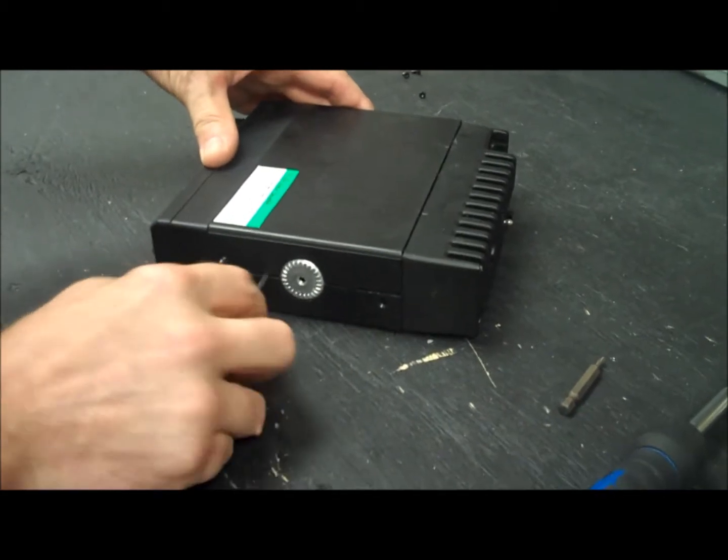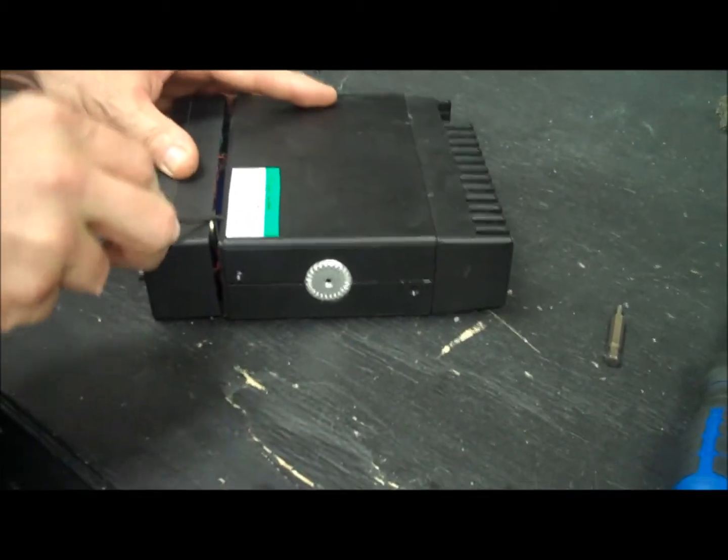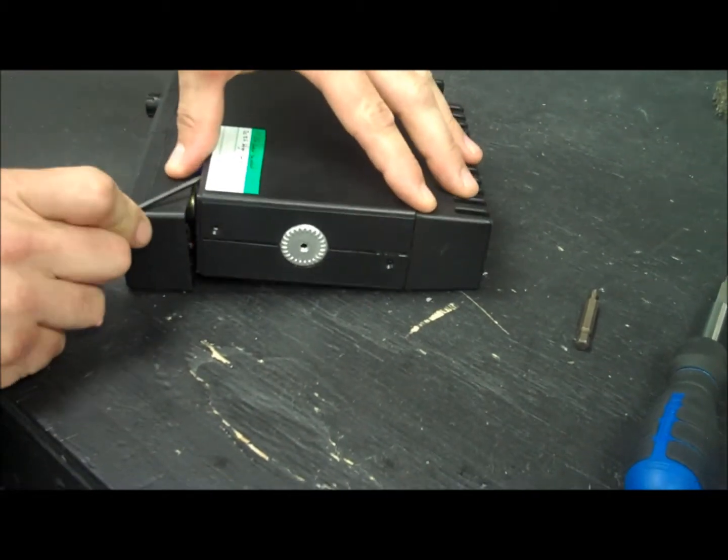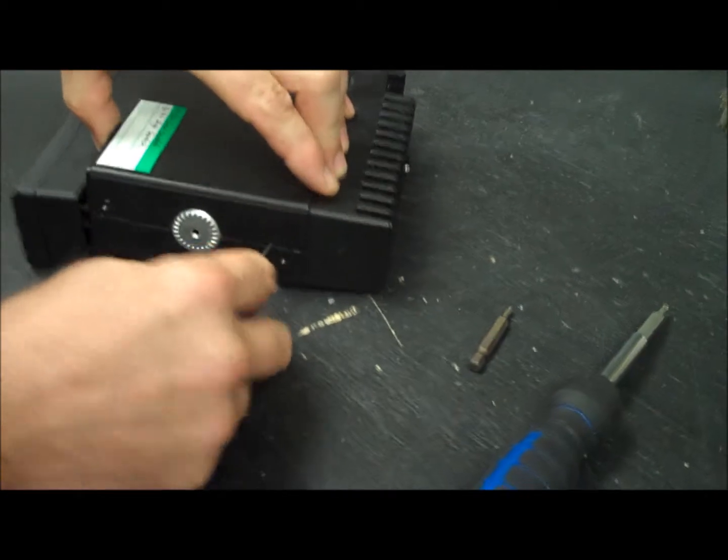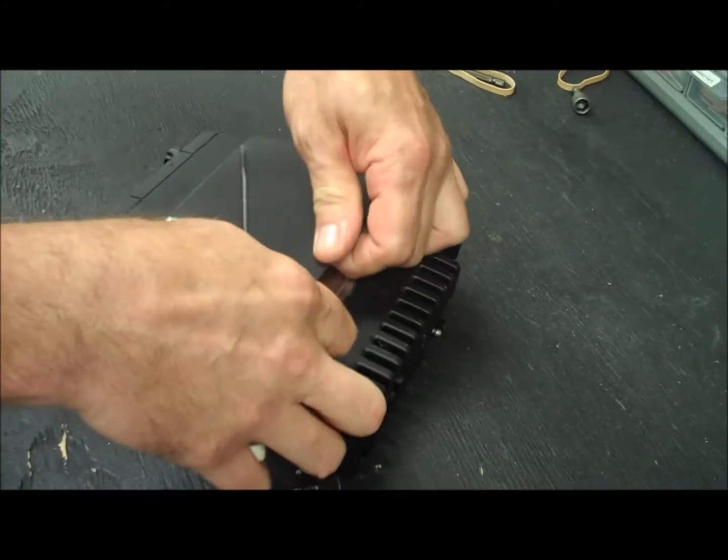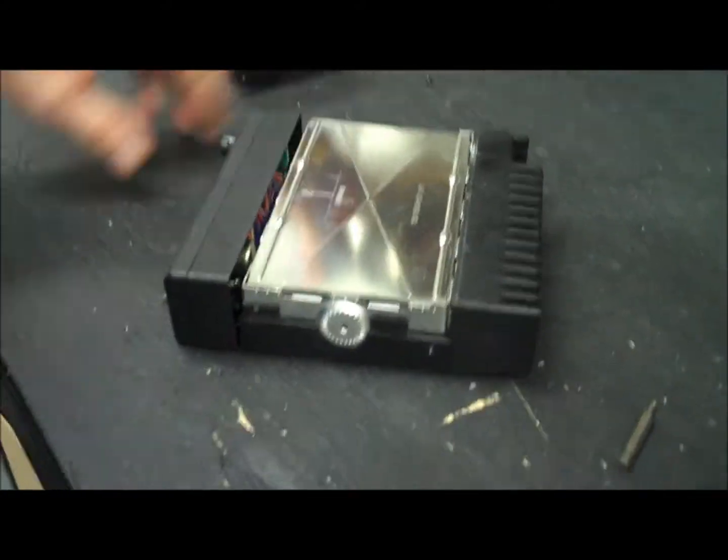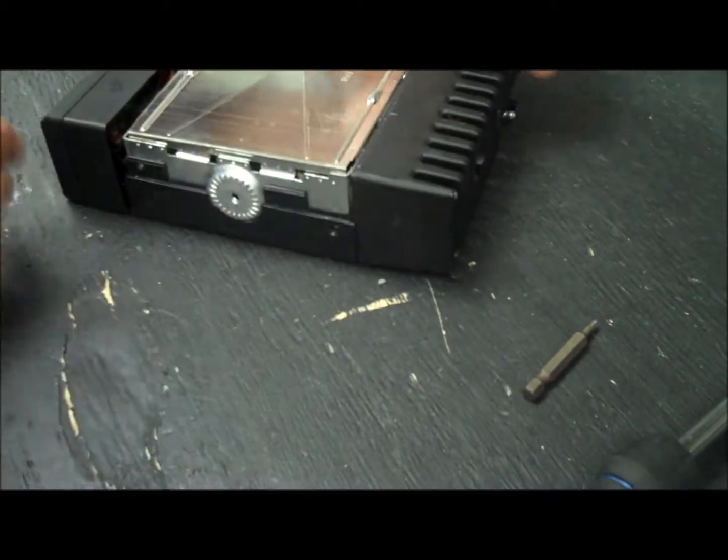I'm going to pop the lid off, just using a little flat head screwdriver. It does wedge into the sides here. Just take the metal cover off, just popping it loose.